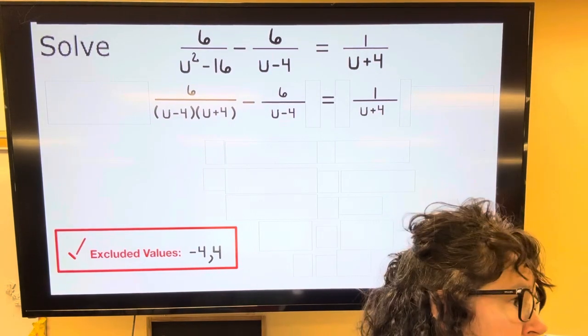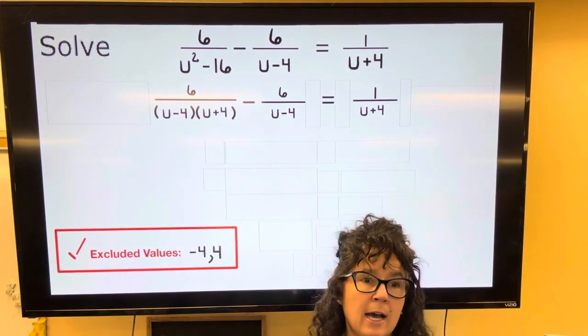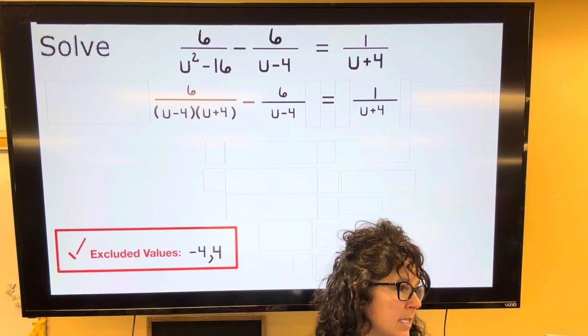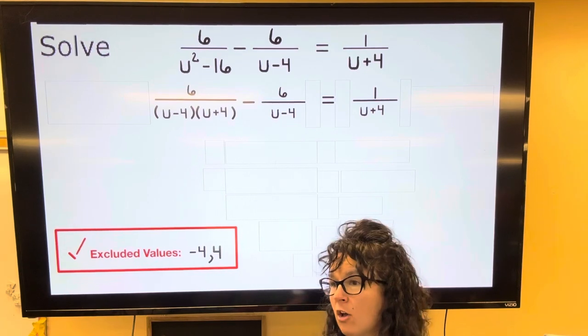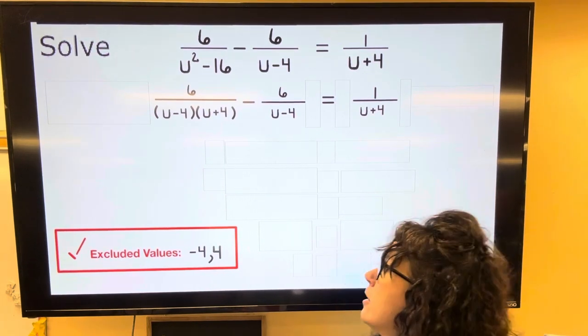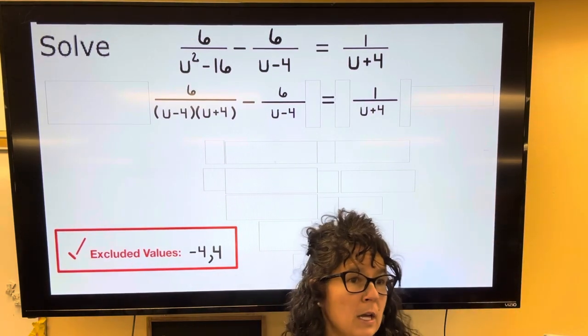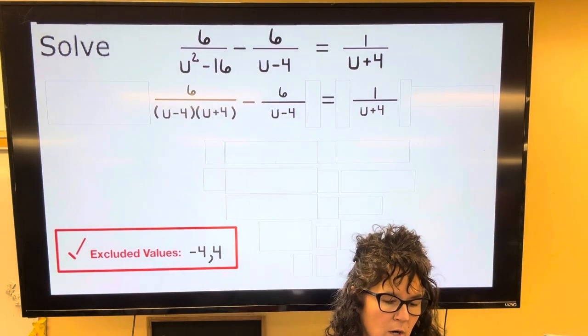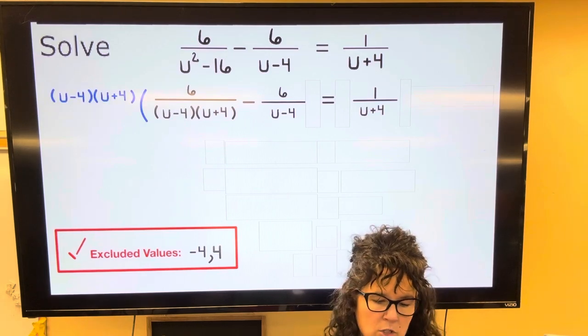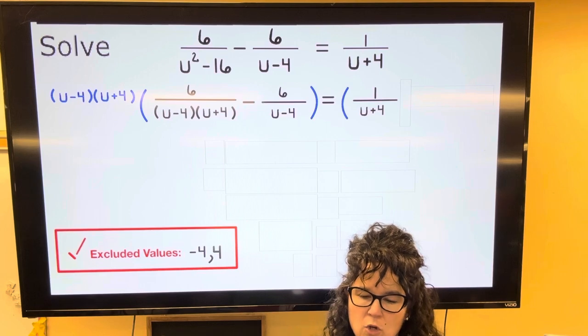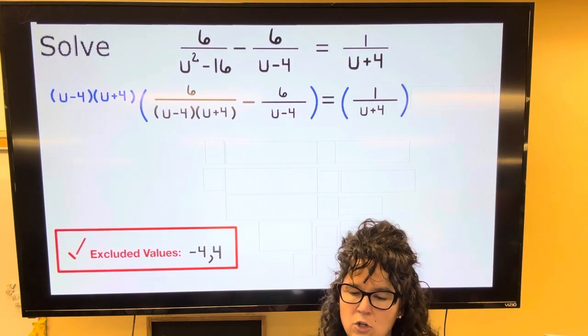Okay, so next our strategy when we have a bunch of fractions is to multiply both sides by the denominators and all the fractions go away. So in my denominator, I have both U plus 4 and U minus 4. So I am going to multiply both sides by U plus 4 and U minus 4.